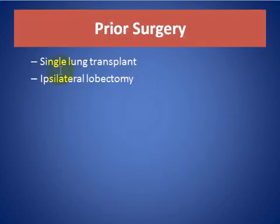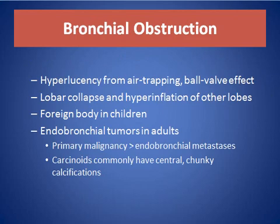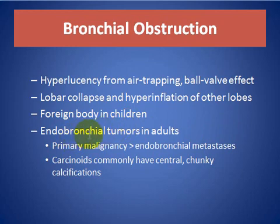Prior surgery — single lung transplant or ipsilateral lobectomy — can cause unilateral hyperlucent hemithorax. Bronchial obstruction causes hyperlucency from air trapping with a ball-valve effect, lobar collapse, and hyperinflation of the other lobes. Foreign body is the cause in children, and endobronchial tumor in adults. Primary malignancy is more common than endobronchial metastasis.